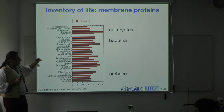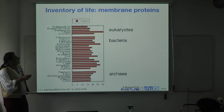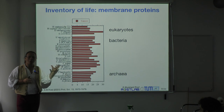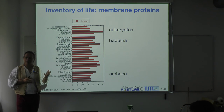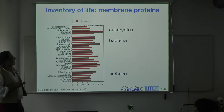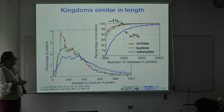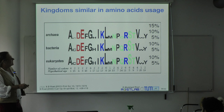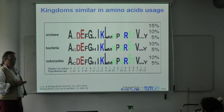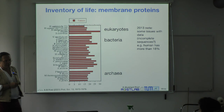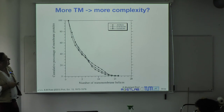The length difference and amino acid composition between archaea, prokaryotes, and eukaryotes are also similar. What you see is that the percentage of particular amino acids used in bacteria, eukaryotes, and archaea is essentially similar. Membrane proteins are very similar across them. So we don't have the issue of more transmembrane helices meaning more complexity.